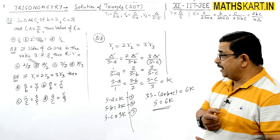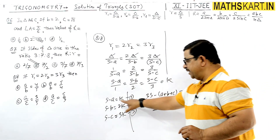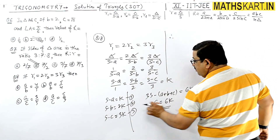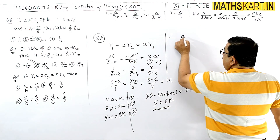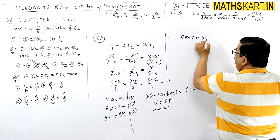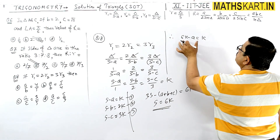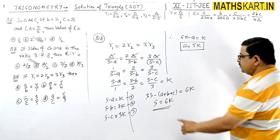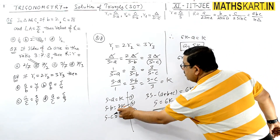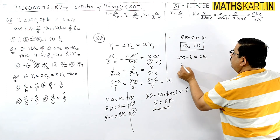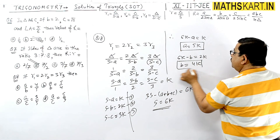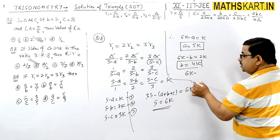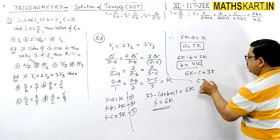Now place values: s - a = k → 6k - a = k → a = 5k. s - b = 2k → 6k - b = 2k → b = 4k. s - c = 3k → 6k - c = 3k → c = 3k।